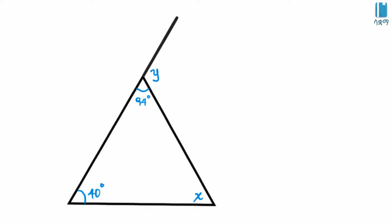We have X plus 94 degrees plus 40 degrees is equal to 180 degrees. We have 180 degrees.